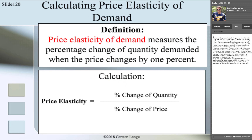To calculate price elasticity in general, you take the percentage change of quantity and divide it by the percentage change of price. Here is an example: let us assume the price increased by 7% and the quantity demanded decreased by minus 21%. To calculate price elasticity, we take minus 21% and divide it by 7%. The result is minus 3.